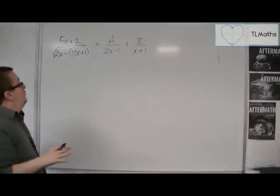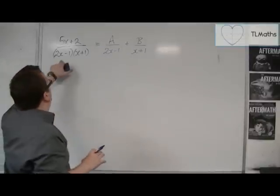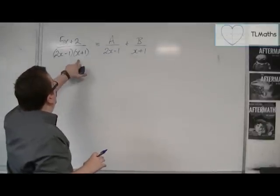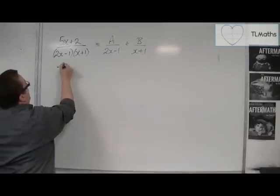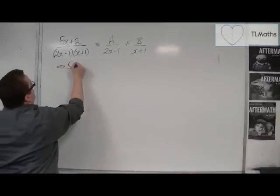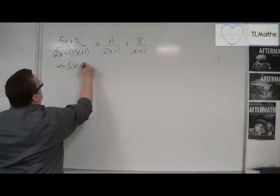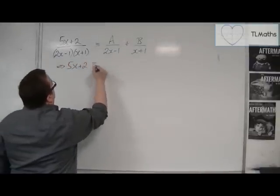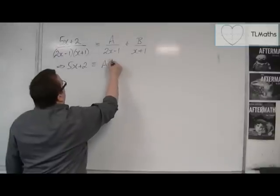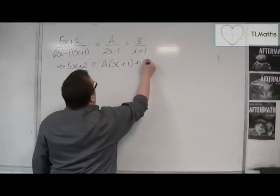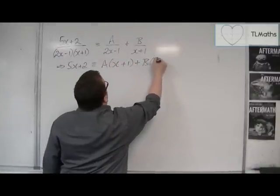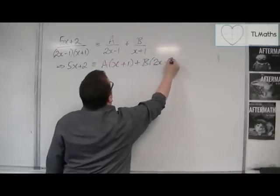Now I want to multiply both sides by (2x - 1)(x + 1). And that gets me: 5x + 2 is equivalent to A times (x + 1) plus B times (2x - 1).